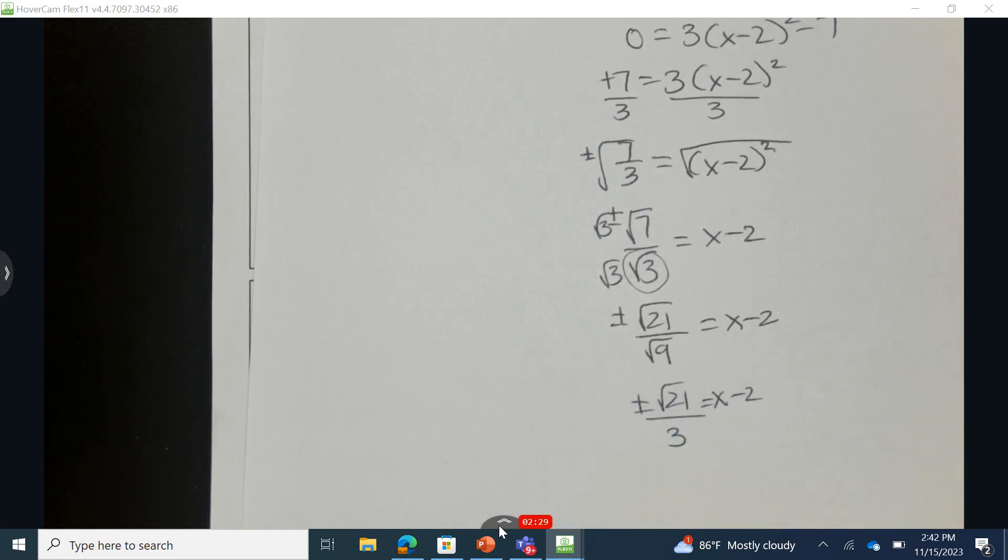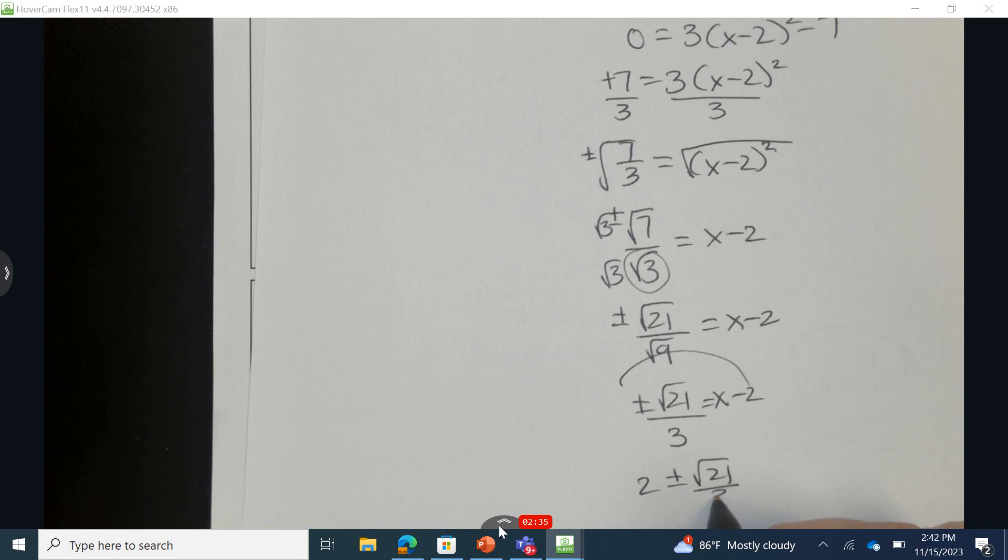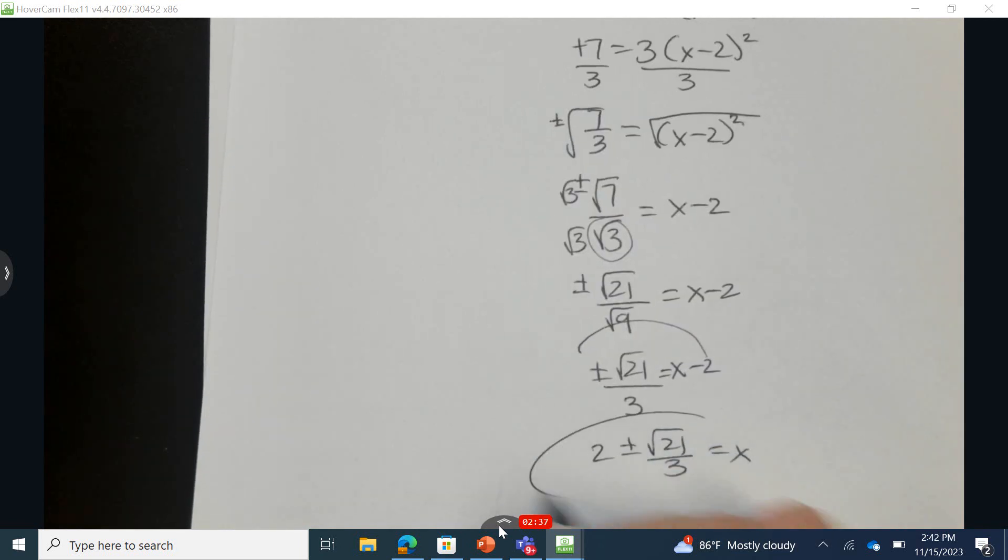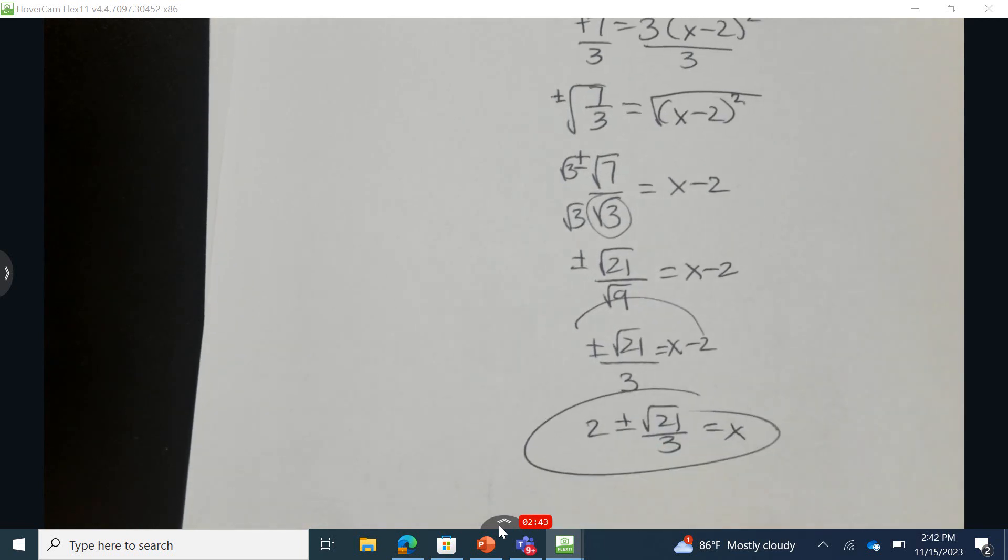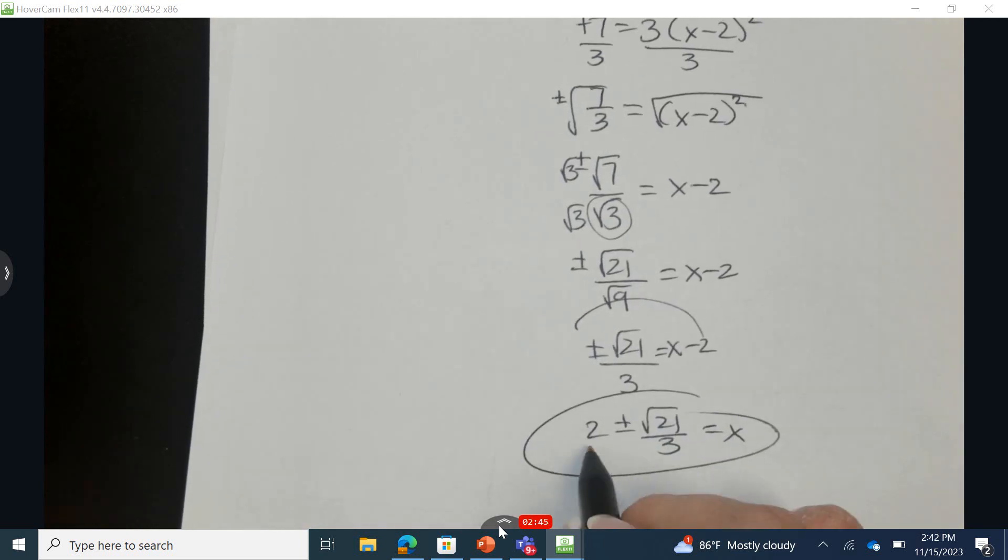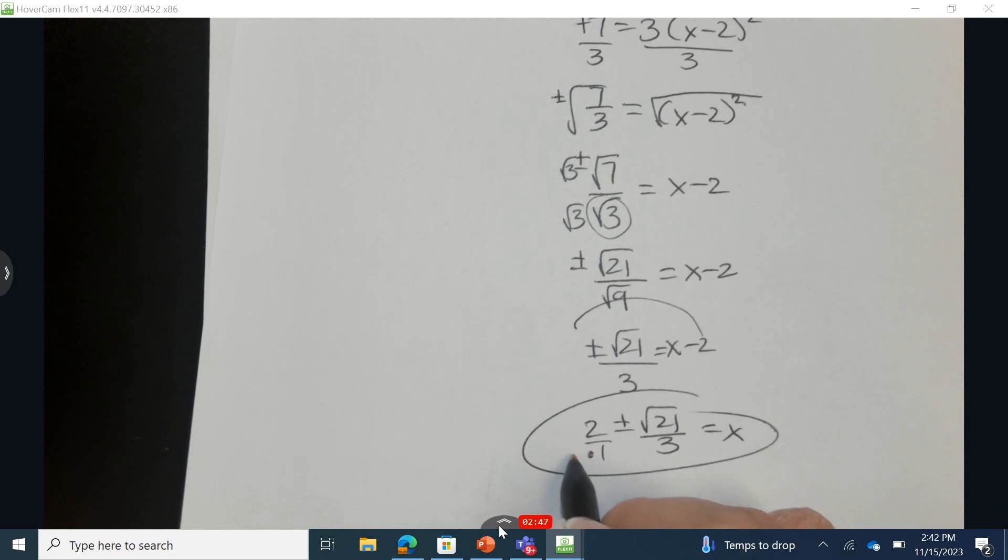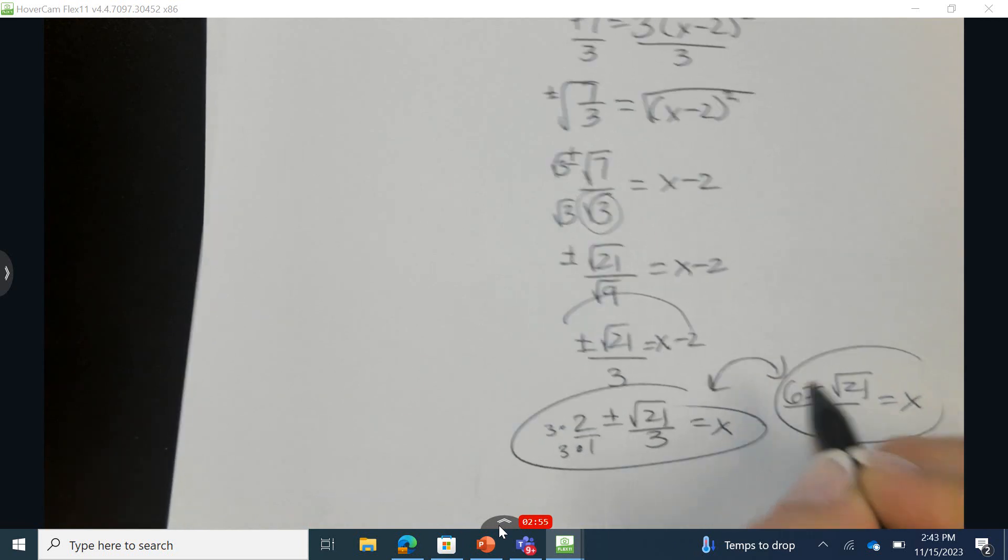And lastly, I'm going to add 2 to the opposite side. So I have 2 plus or minus the square root of 21 over 3. Now this would be a way to express by hand the zeros. But you may see that they choose to have a common denominator. So I'm going to take this times 3 and times 3. And I have 6 plus or minus the square root of 21 over 3. These are equivalent, just in a different form.